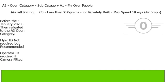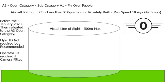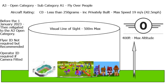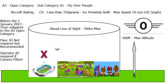This is the A3 open category subcategory A1: overflight of people with a C0 aircraft less than 250 grams, including privately built, with a maximum speed. You require an operator ID; a flyer ID is not required but recommended, and you may need commercial insurance if using it commercially. Remember, with overflight, remain high — do not fly low and buzz people.